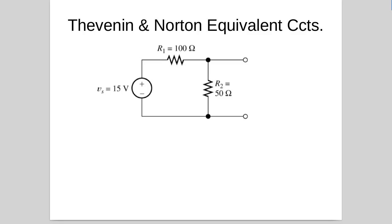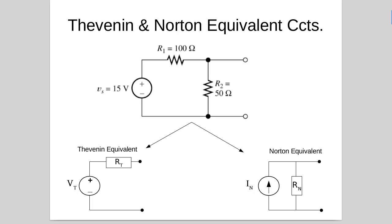In this example we're looking at the analysis of a simple source and we're going to find enough information to create the Thevenin and Norton equivalent circuits. We'll look at both types of equivalent circuits because in analyzing for one we have nearly enough information for the other, and sometimes in analyzing for one we have to find the information for the other first.